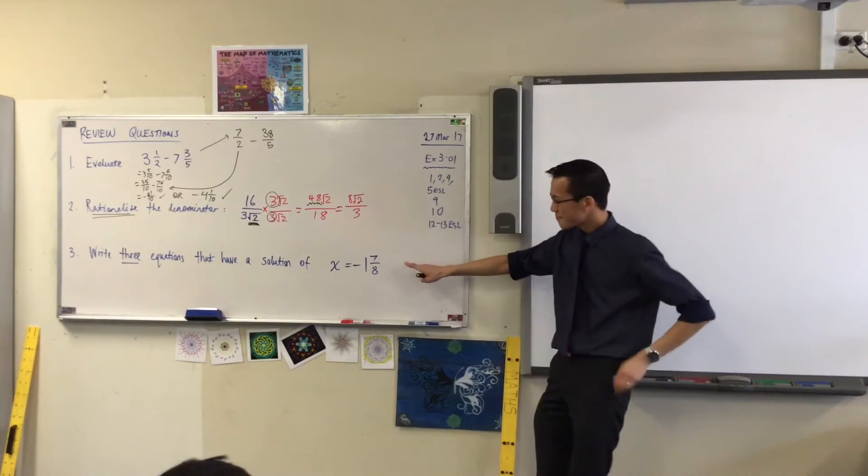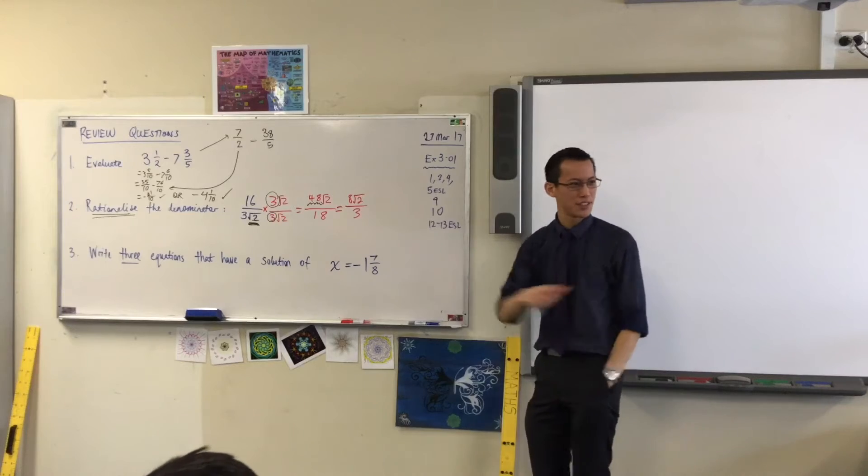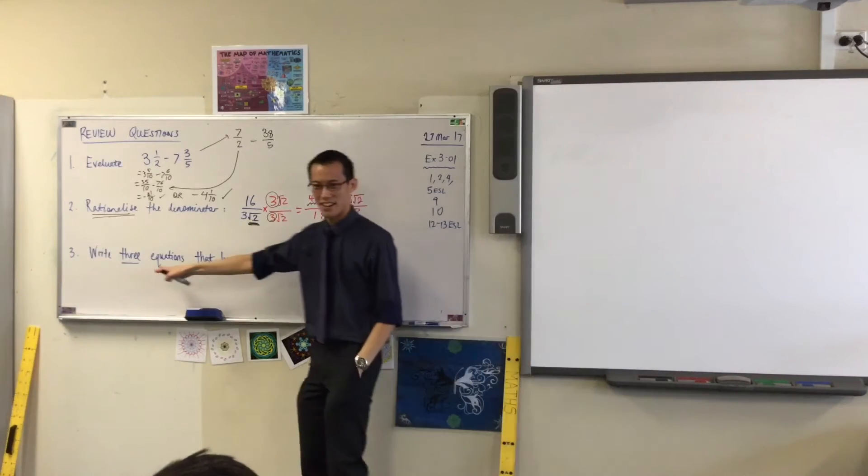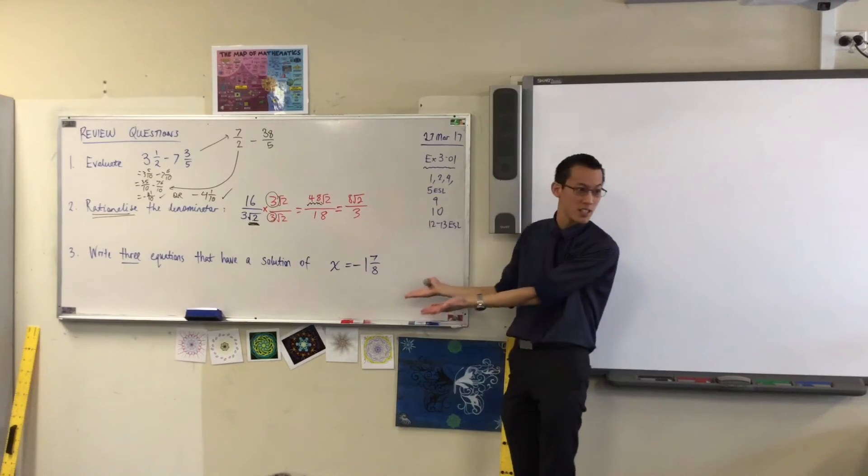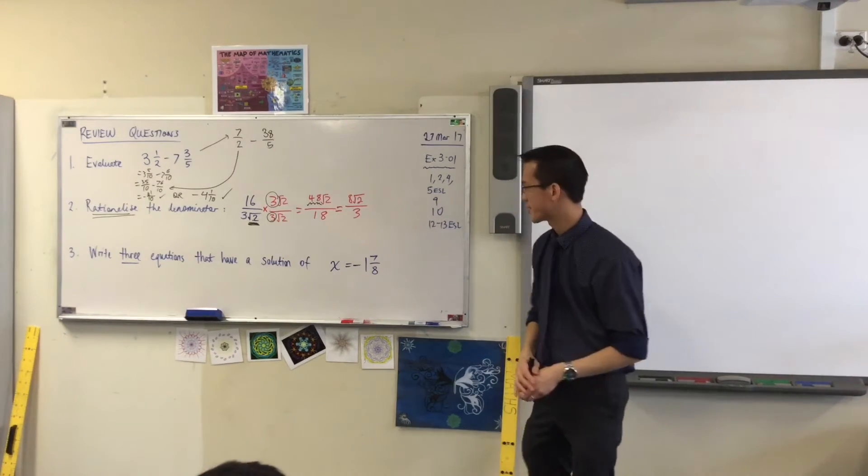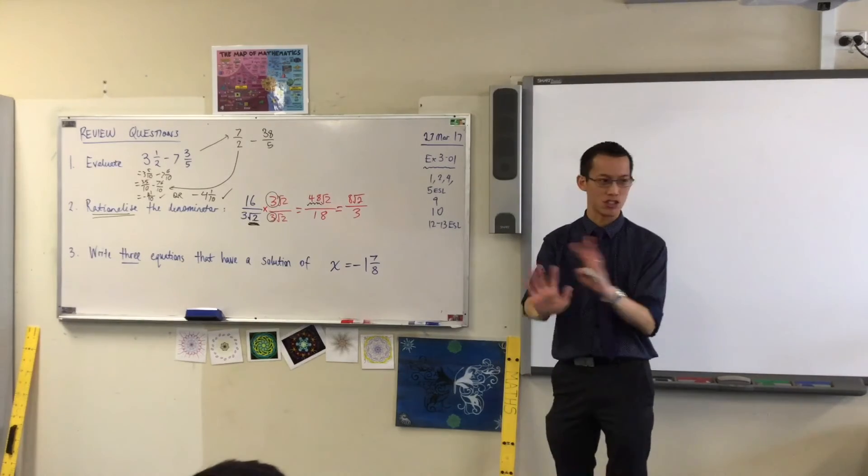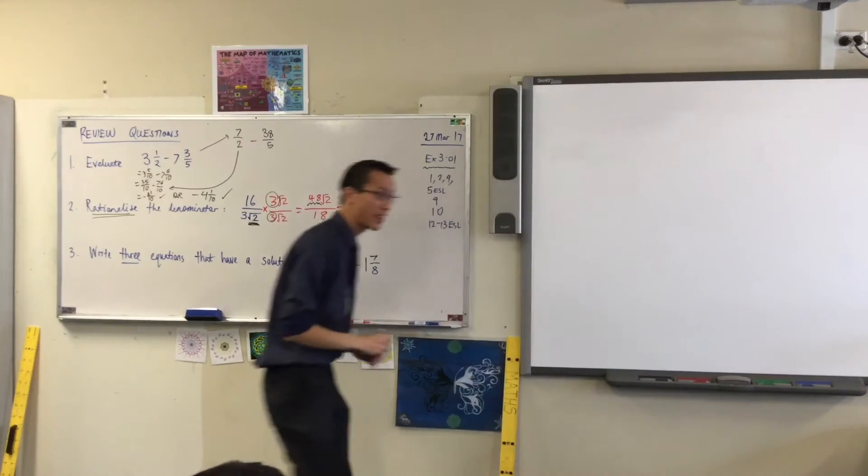Right. Now, number 3. This is weird, because usually you have to do this in reverse, don't you? You get given an equation, and then I ask you to work on it and work on it until you get this as your last line. So I've asked you to kind of do it in reverse. Has anyone got an equation? Just one. Anyone want to shout one out? Yeah, go ahead.